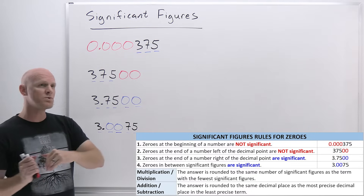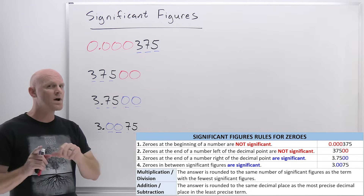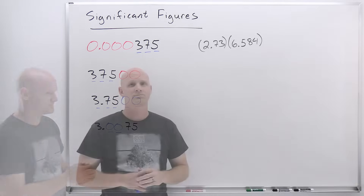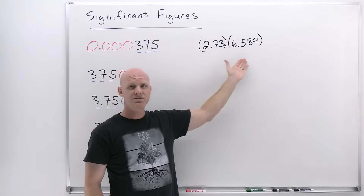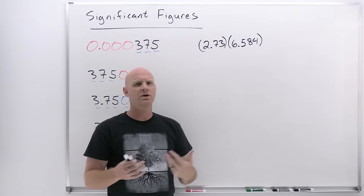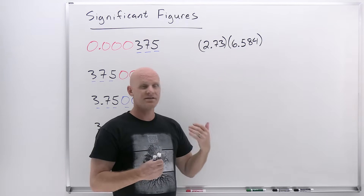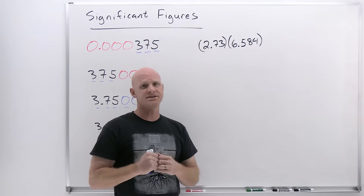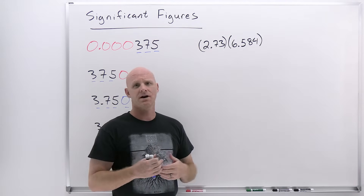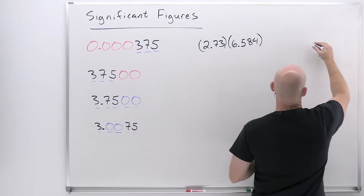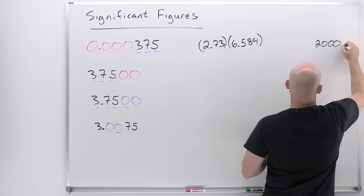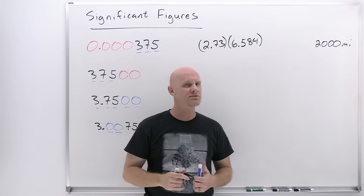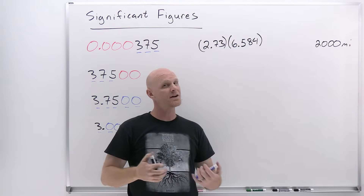There's a slightly different rule for addition and subtraction — we'll deal with that when we get there. First, let's look at multiplication and division. Let's say I wanted to take a trip from Phoenix to Washington, D.C., and you asked how far it is. I said it's like 2,000 miles. Did it sound like I had a really good idea of exactly how far it was? Probably not.